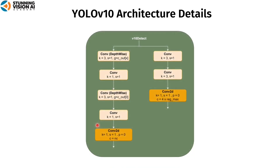The next block is V10Detect, the head of the YOLO V10 architecture. There are three V10Detect blocks to detect small, medium, and large objects. This block is divided into two parts. The first part generates class probabilities: depth-wise conv (kernel 3, stride 1), conv block (kernel 1, stride 1), depth-wise conv, conv block, and a conv layer (kernel 1, stride 1, padding 0). The second part generates bounding box coordinate predictions: two conv blocks with kernel size 3 and stride 1, then a conv layer with kernel 1, stride 1, and padding 0.